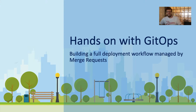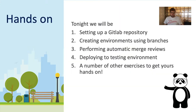Tonight we're going to be building a full deployment workflow managed by merge requests, using GitLab to deploy some infrastructure and applications to the cloud. The agenda for tonight: we'll be setting up a GitLab repository for our GitOps workflow, creating environments from that repository using branches, performing automatic merge reviews, and then deploying to a testing environment. After this, there are three exercises you can pick up in your own time: tearing down the infrastructure, introducing failures to test automated merge reviews, and deploying to production.